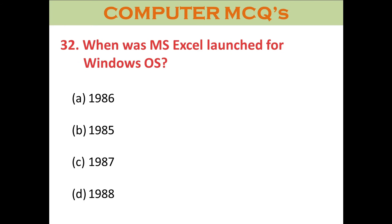Question thirty-two: When was MS Excel launched for the Windows operating system? A. 1986. B. 1985. C. 1987. D. 1988. The right answer is C: 1987.